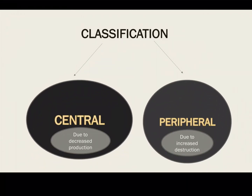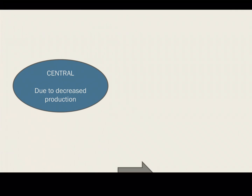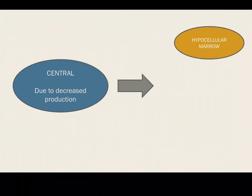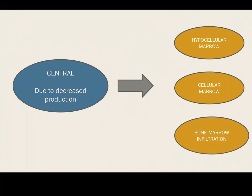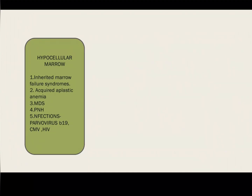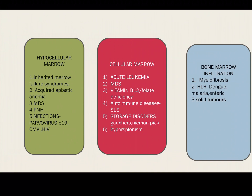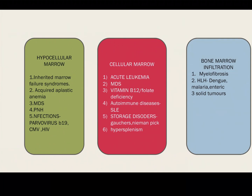Pancytopenia is divided into two types: central pancytopenia and peripheral. Central is when there is decreased production, and peripheral is when there is increased destruction of cells. In central pancytopenia, the bone marrow is at fault. The bone marrow can be hypocellular, cellular, or show infiltration. A hypocellular bone marrow means the bone marrow is not forming cells — it can be a bone marrow failure syndrome, aplastic anemia, or infections like parvovirus, CMV, and HIV that decrease production.